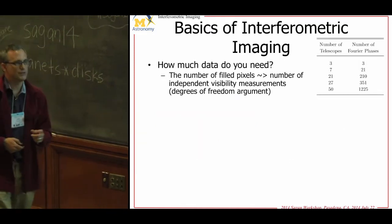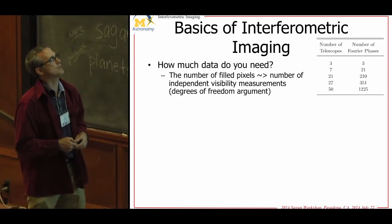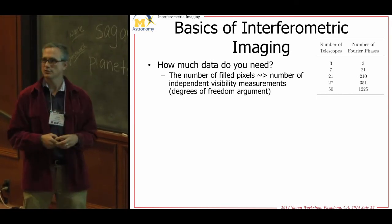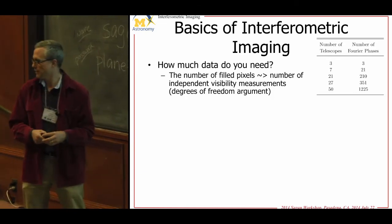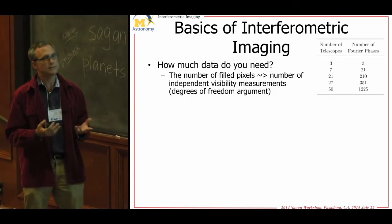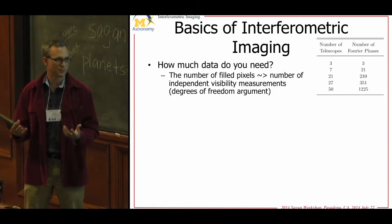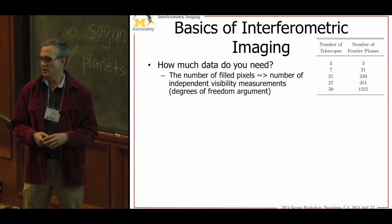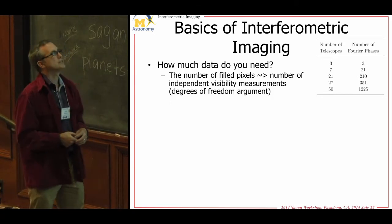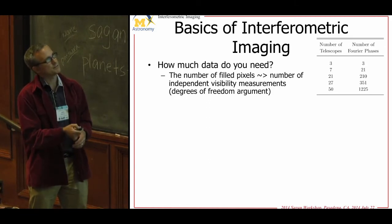Just a brief note on imaging: the amount of data you need is related to how much complexity is in your image. Simple objects don't need much data; arbitrarily complex objects need a lot. There's no single answer — it depends on what you're looking at. The number of phases or baselines you get increases drastically with telescope number.